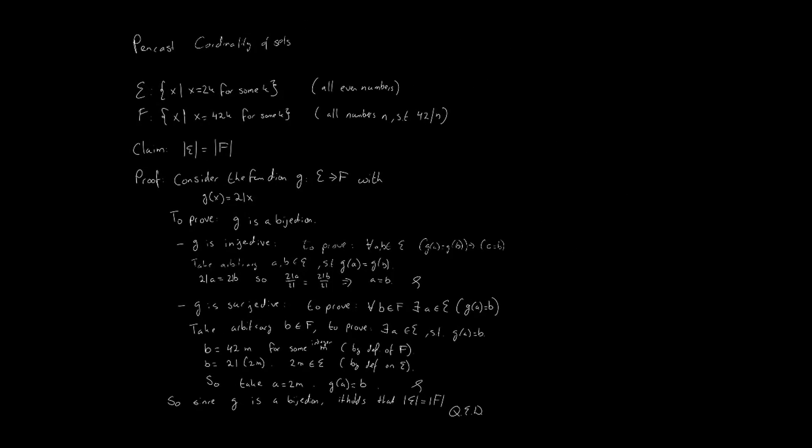So when you need to prove that the cardinality of two sets is the same you should find a function, a function that maps your elements from one set to another. And you should make sure that this is a bijective function. And after that you should prove it. You should prove that your function is a bijection.